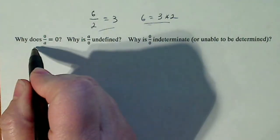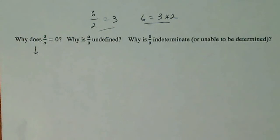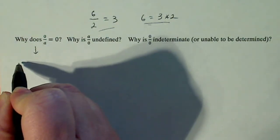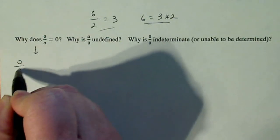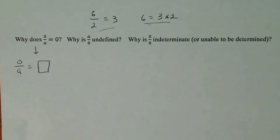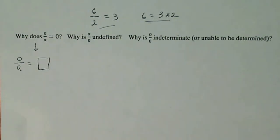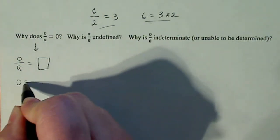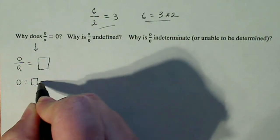So let's start with this guy first. Why does 0 over A equal 0? So let's start with 0 over A is equal to some number we don't know. We're going to try to fill in the box. So if I use the concept that we used above with 6, 2, and 3, I can rewrite this as multiplication. So that's 0 is equal to box times A.